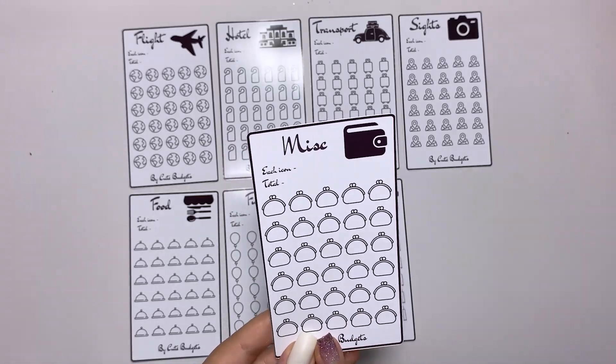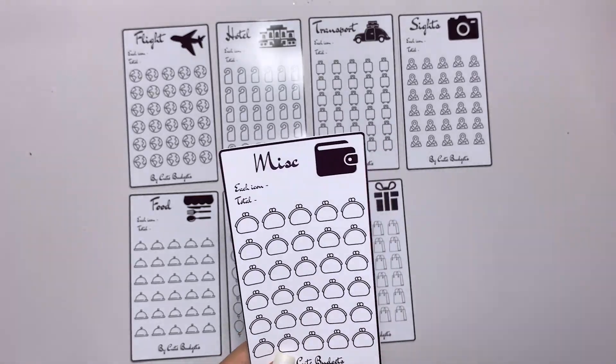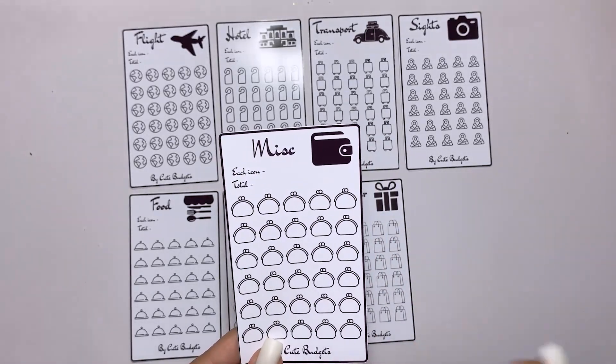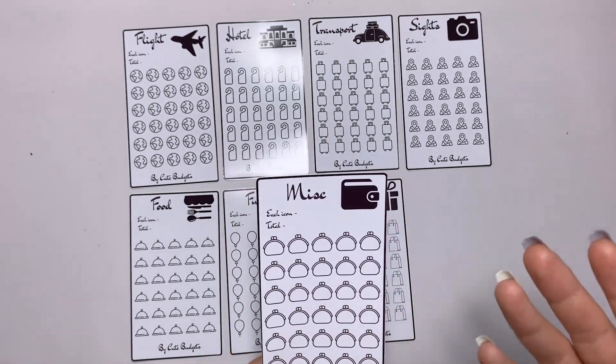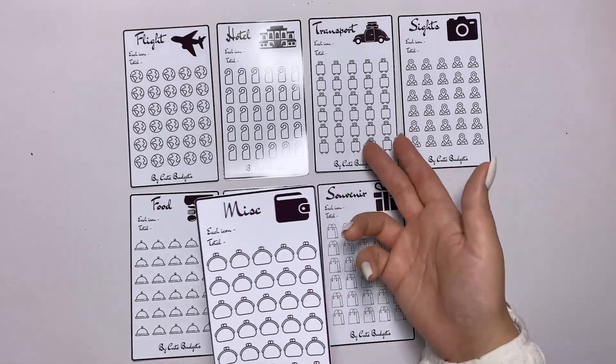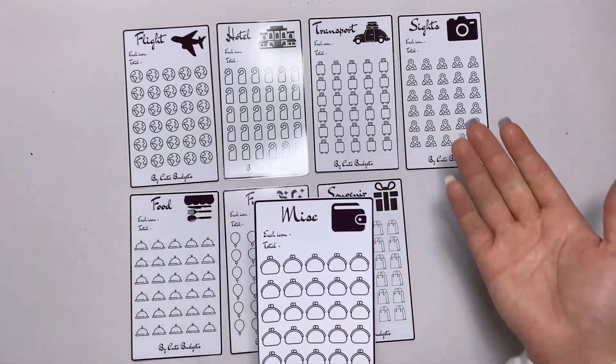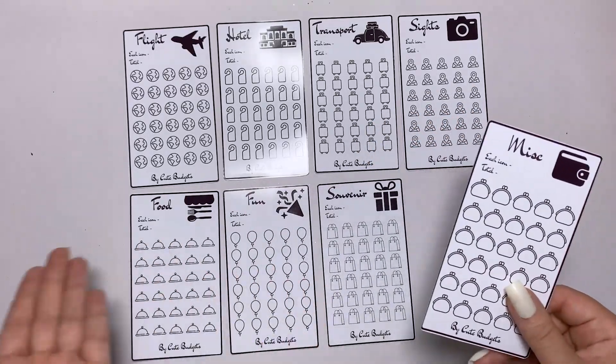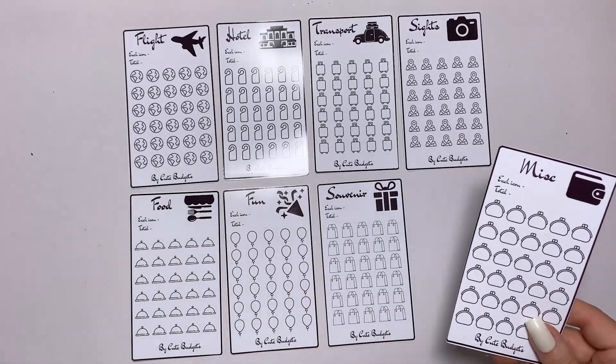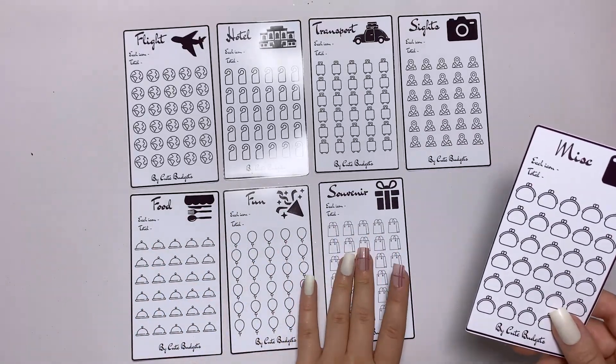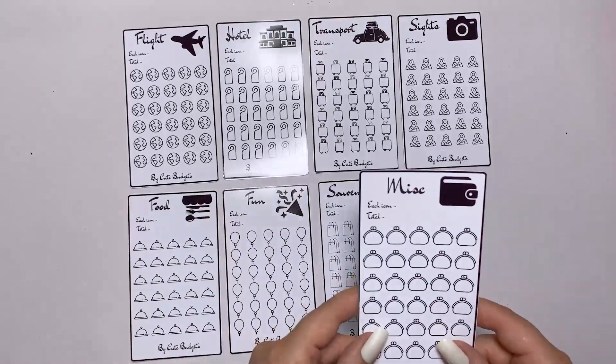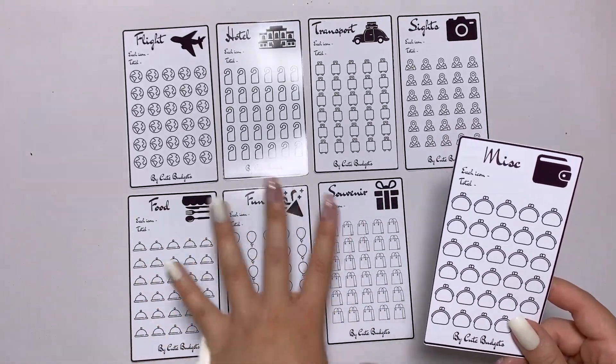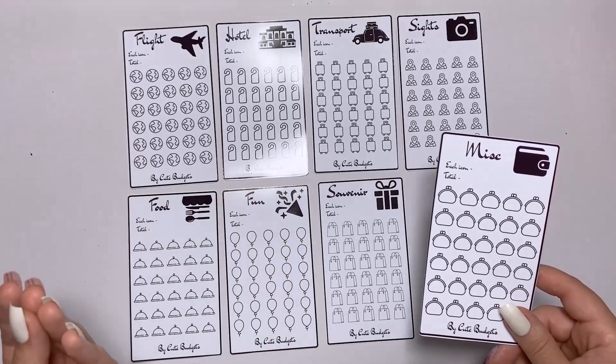It has 30 icons again and you can decide how much you want to save for that. This miscellaneous can be additional just for transport, let's say if it's not going to be enough, or for sightseeing, for food, fun, or souvenirs. For me usually it's souvenirs and for food, because I like to try everything so I usually mess up with counting the money for food.